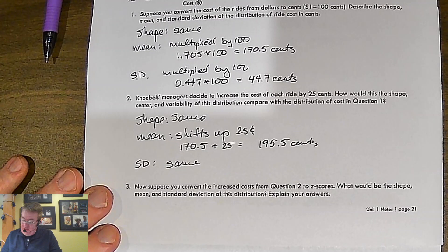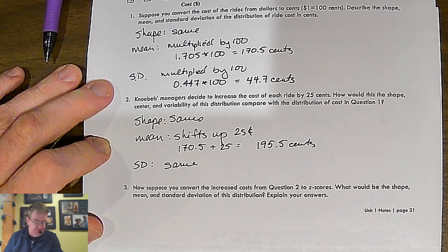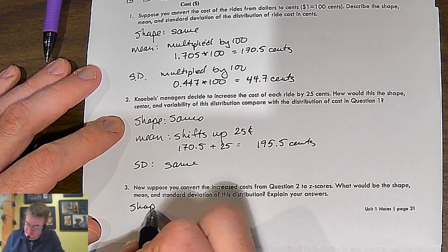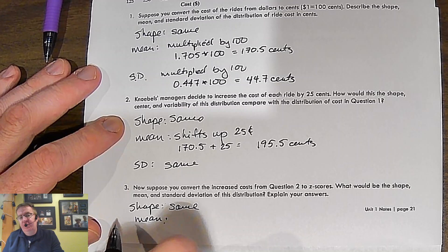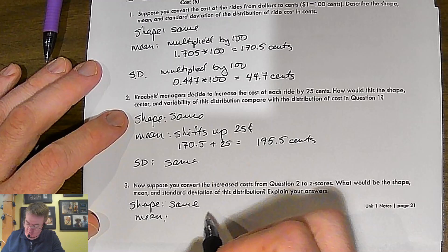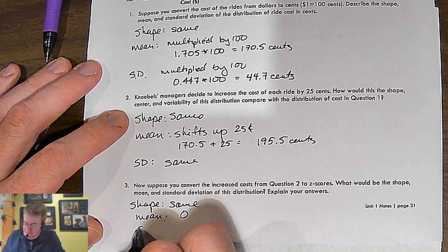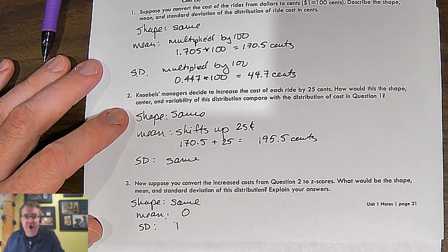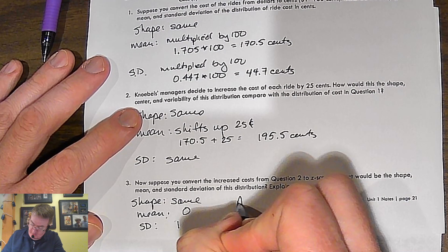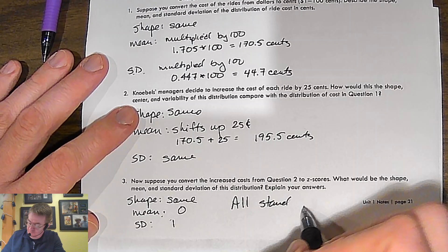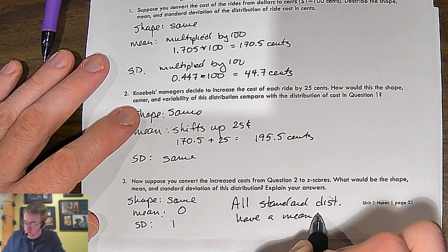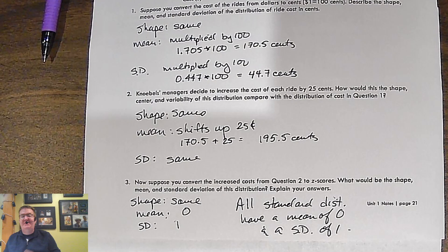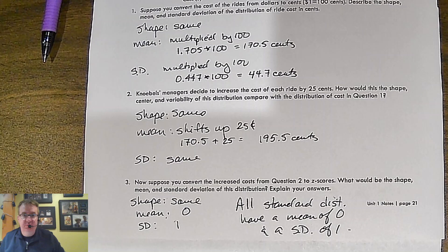Now, suppose you converted the increased cost from question two into z-scores. What would the shape, the mean, the standard deviations happen to this distribution? Well, your mean, well, your shape, first of all, is going to be the same, right? What's your mean going to be? Turn back a page. We said it at the bottom of page two. The mean is always zero. Your standard deviation, then, is going to be one. Always, always, always, always, always. Okay? That's always going to be. So all standard distributions have a mean of zero and a standard deviation of one. That's the whole point. We're going to talk more about that as we go. Hope that all makes sense.